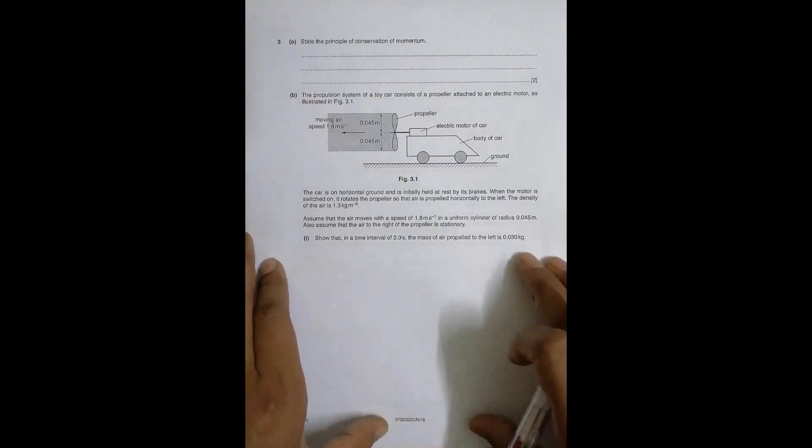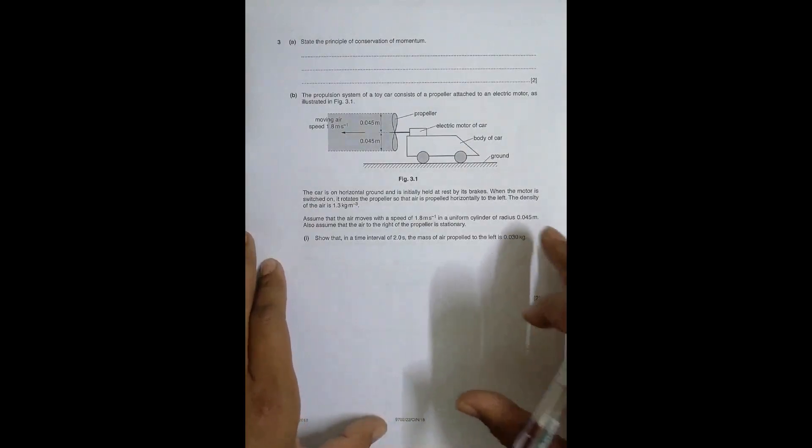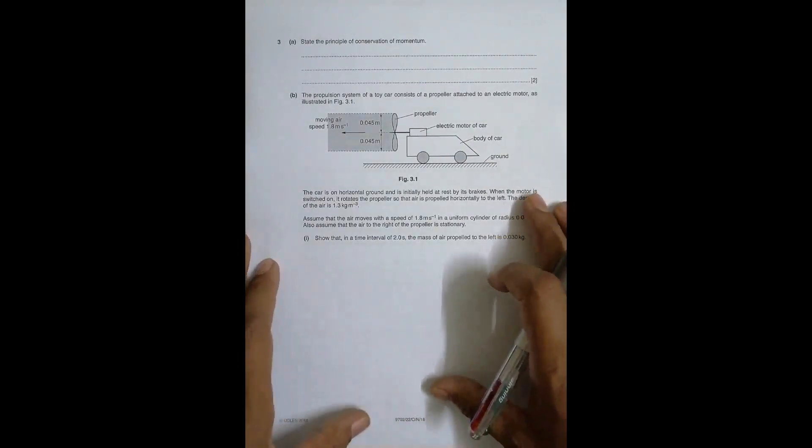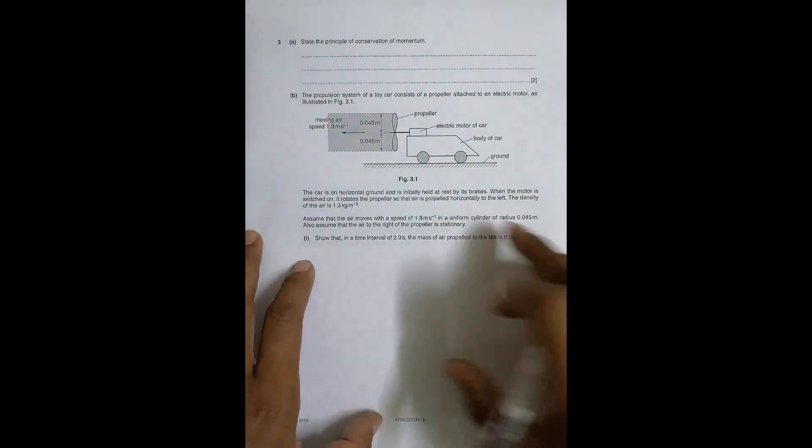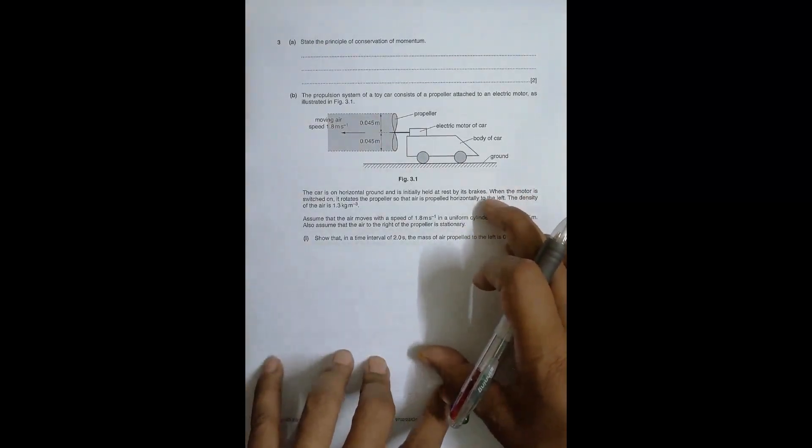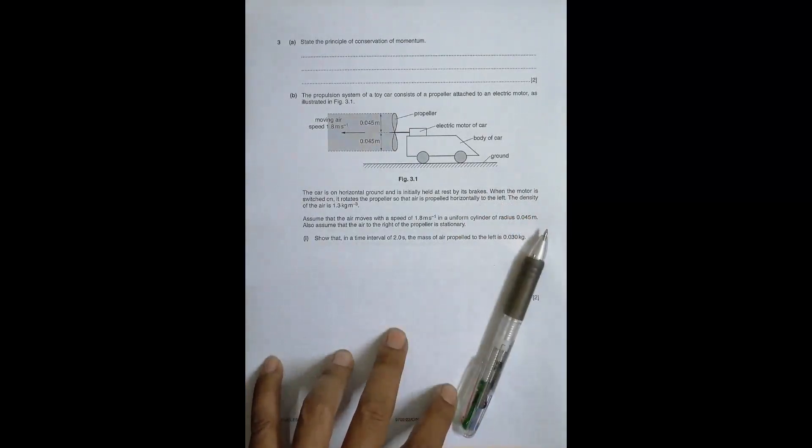Hello folks, this is 2018 October November paper 22, question number 3. This question is concerned with the chapter dynamics, regarding forces and momentum. The first question says state the principle of conservation of momentum. For a closed system or for a system where there is no external force, the total momentum of the bodies remain constant.